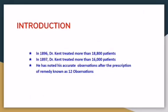Let us have a look at the introduction. In the year 1896, Dr. Cain treated more than 18,800 patients. And in 1897, Dr. Cain treated more than 16,000 patients. He noted accurate observations after the prescription of remedy, which are known as the 12 observations.